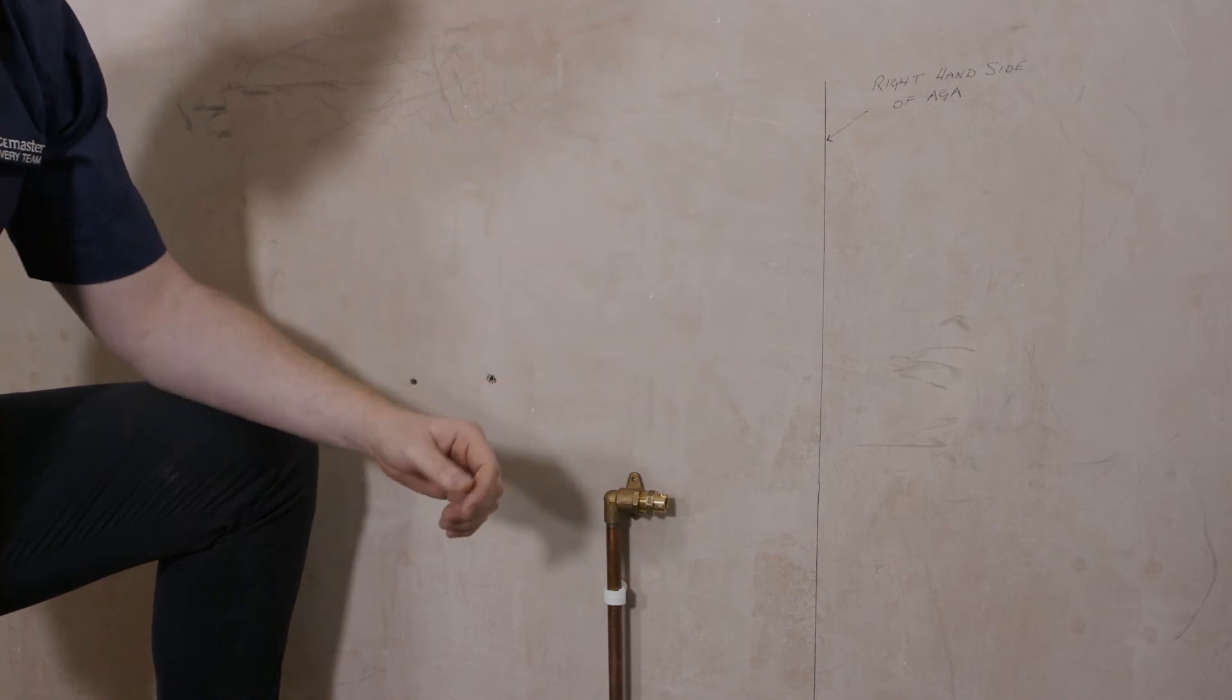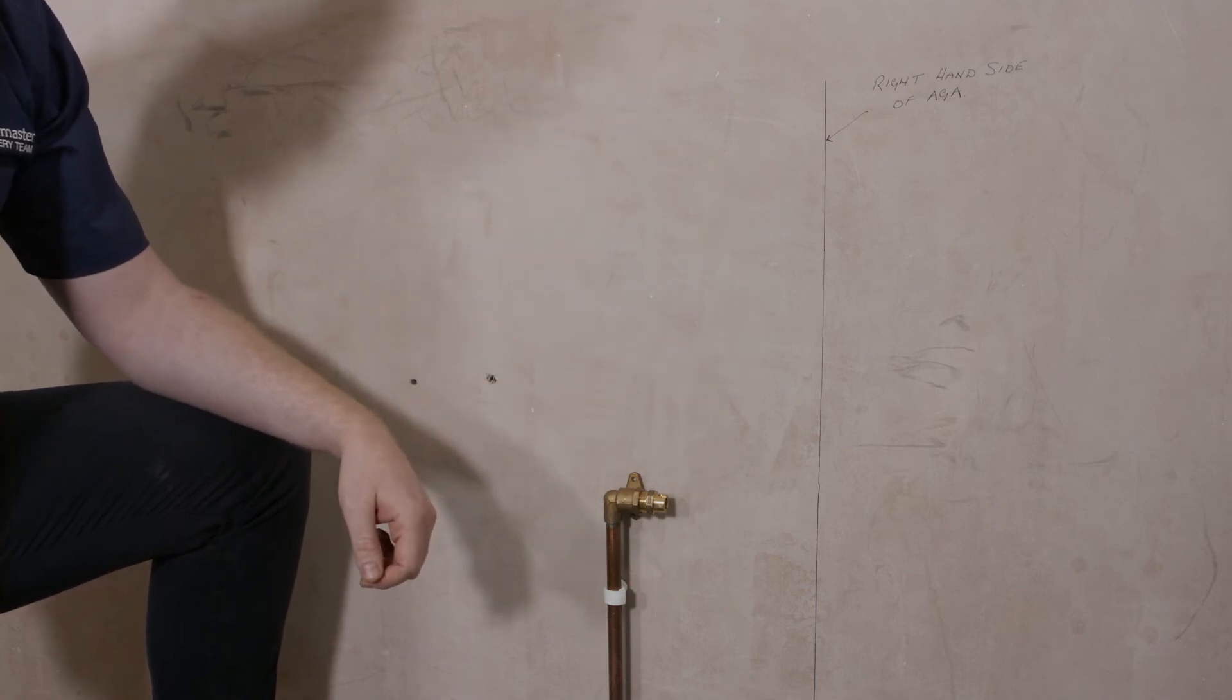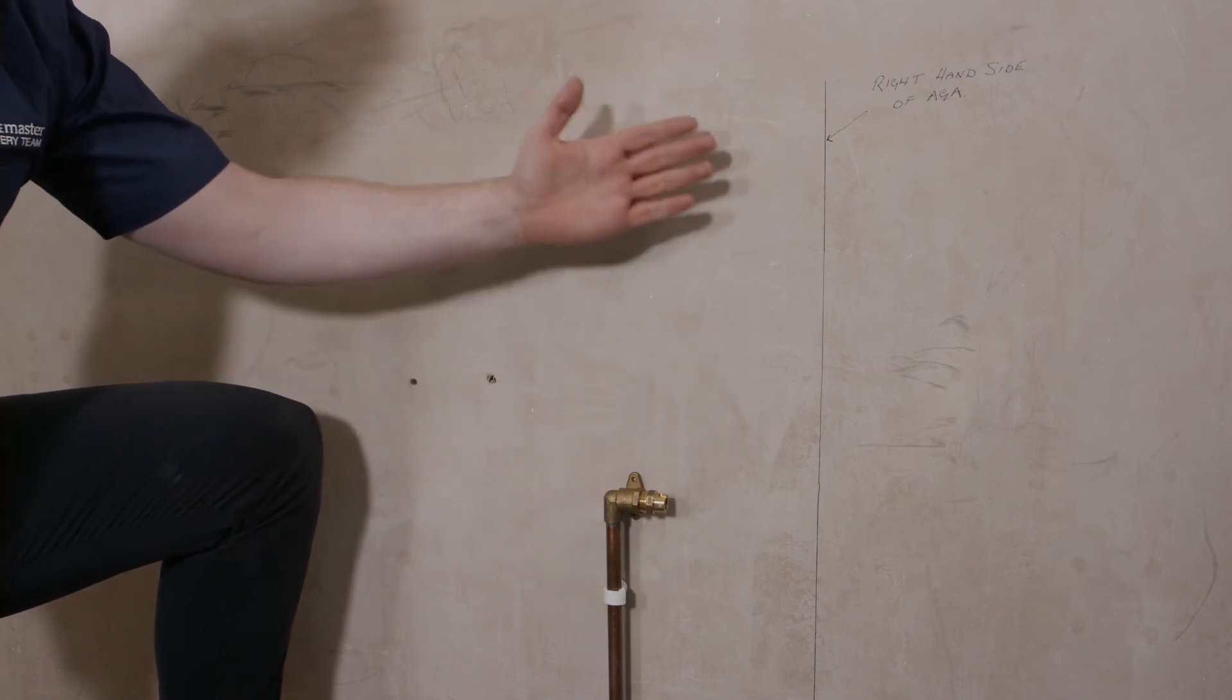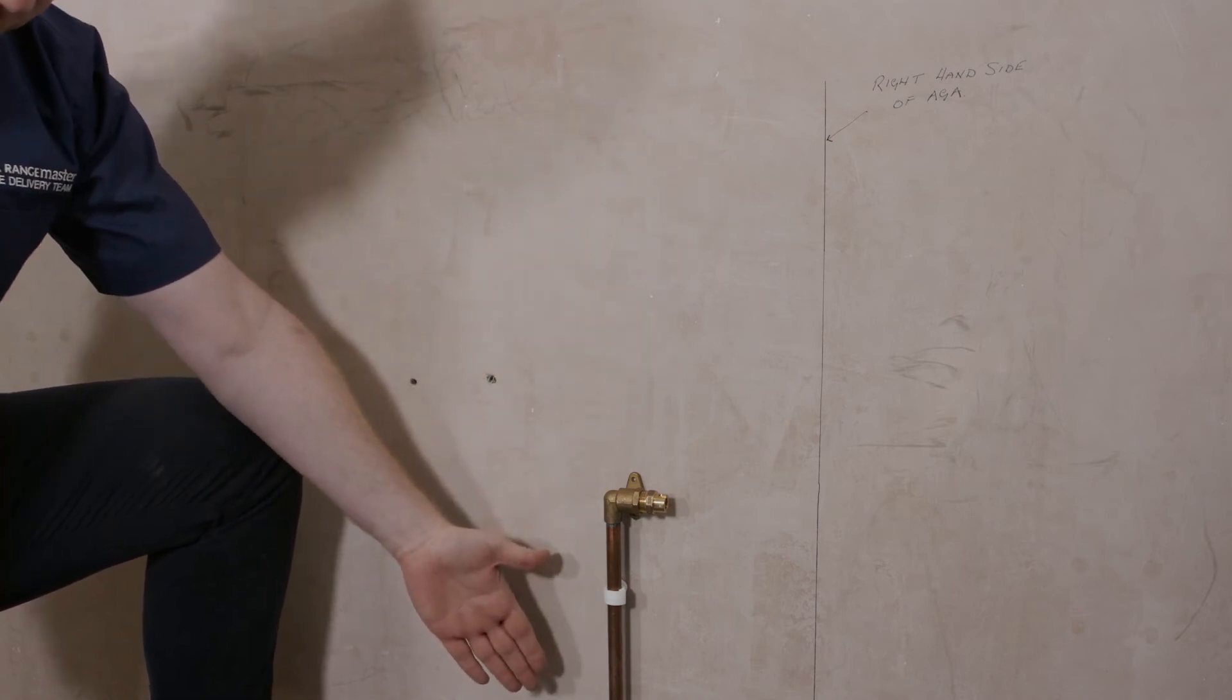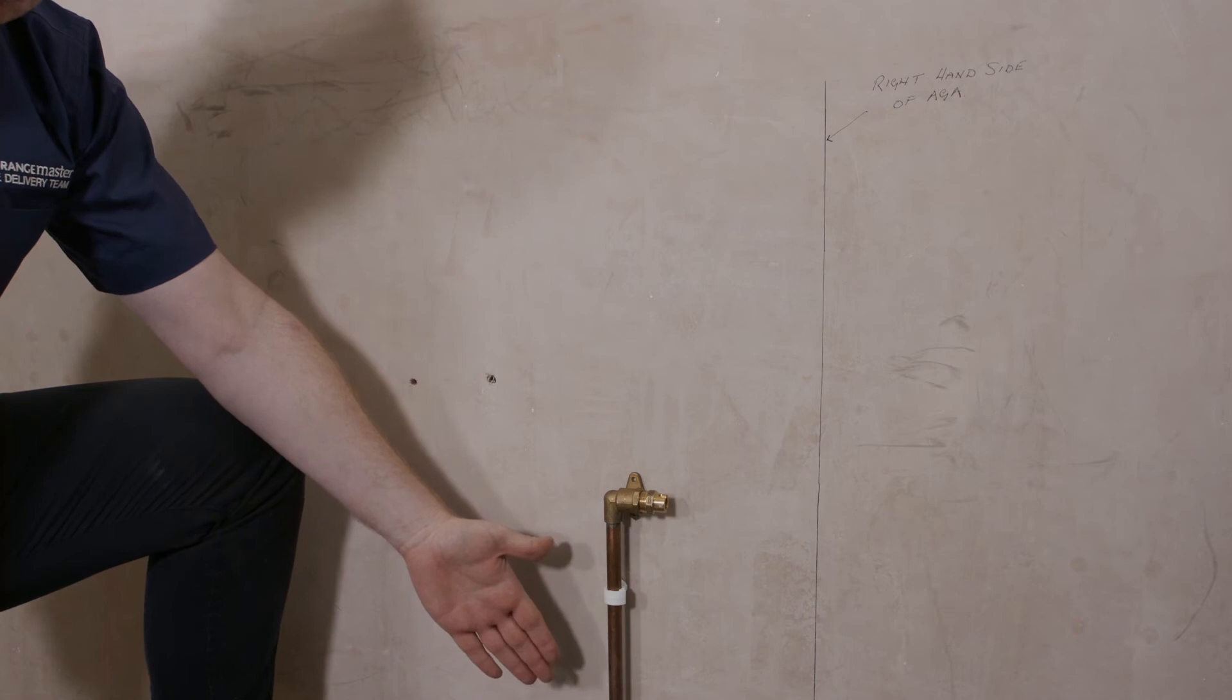The gas point must be located in an area that is between 35mm and 255mm from the left hand side of the cooker when viewed from the rear and between 365mm and 665mm when measured from the floor.